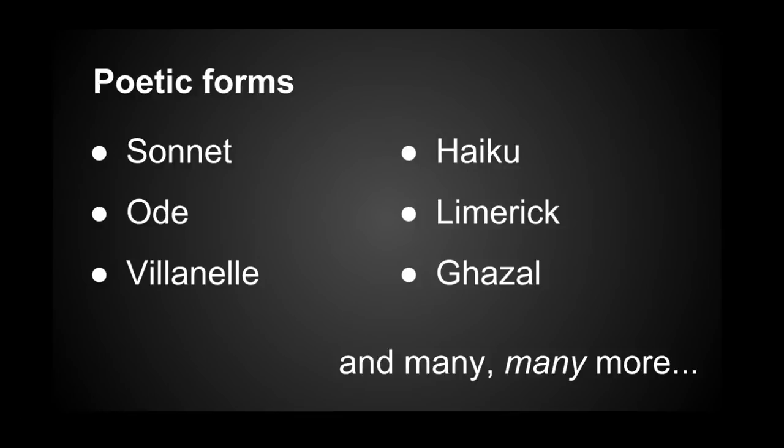Poetic forms are like formulas that combine multiple techniques. Some of the famous ones are sonnets, limericks, villanelles from France, haikus from Japan, and ghazals from India. There are countless forms that you can use, and you are free to concoct your own — it's all up to your imagination.